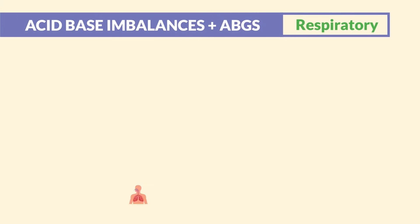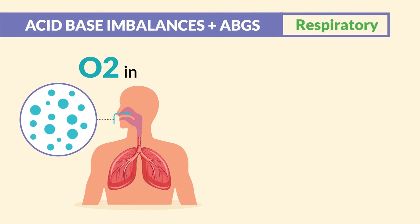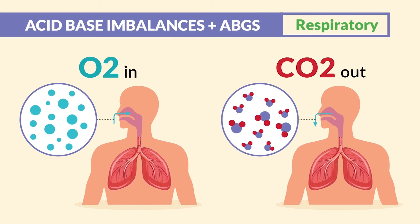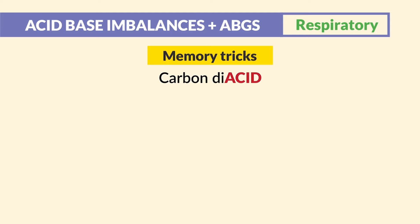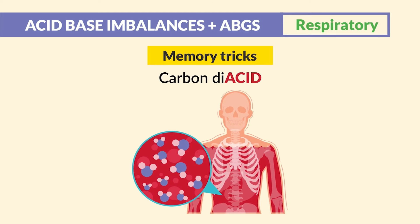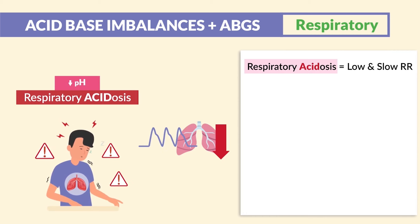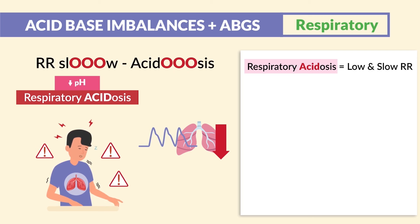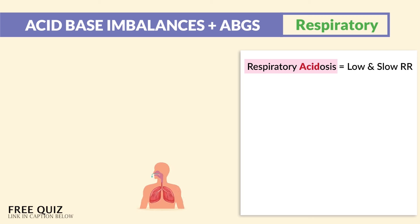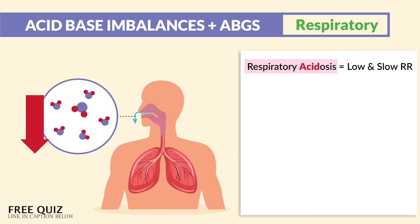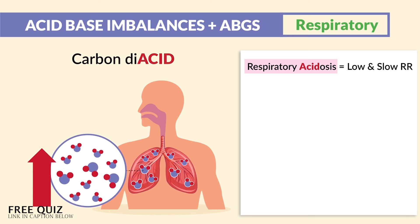On the other side of things, you breathe oxygen in and CO2 — carbon dioxide — out. Carbon dioxide makes the blood more acidic. So in respiratory acidosis, we have a low and slow respiratory rate. A client with hypoventilation is not breathing out that CO2, so more carbon dioxide is retained in the body from low and slow breathing.